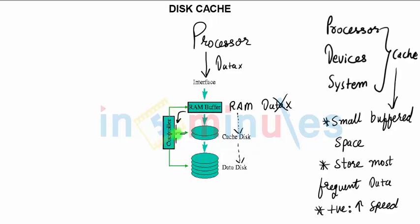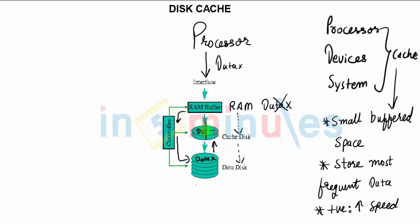Since data x is not available in RAM, RAM issues a command through the controller to search for data x. The controller searches and finds data x. While retrieving this data, data x first goes into disk cache, and from disk cache it goes to the RAM buffer, and from the RAM buffer through the interface it finally reaches the processor.